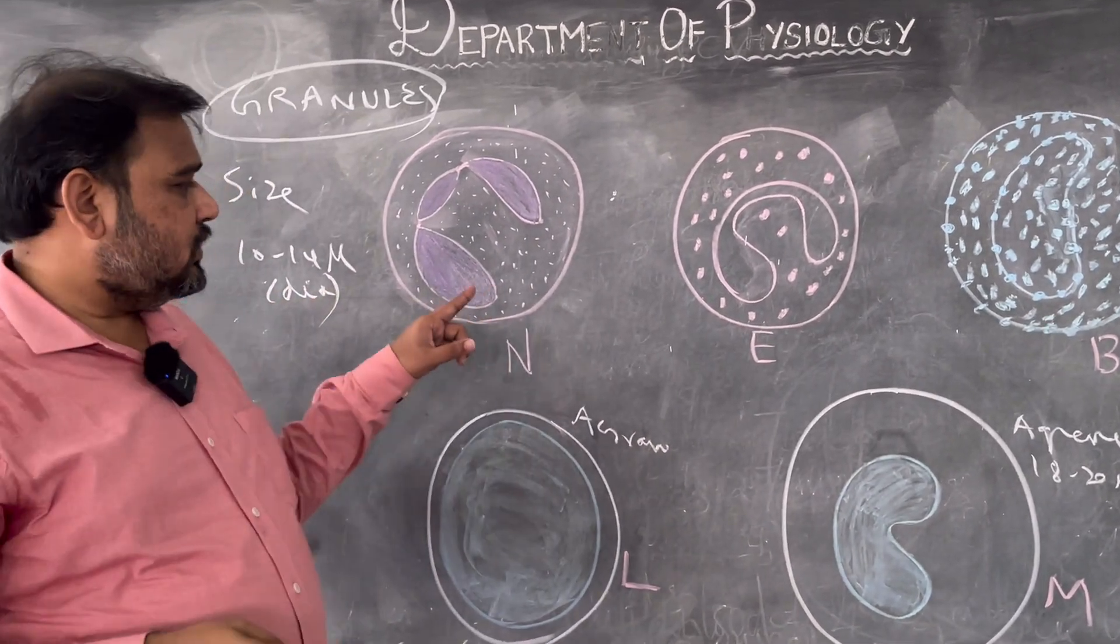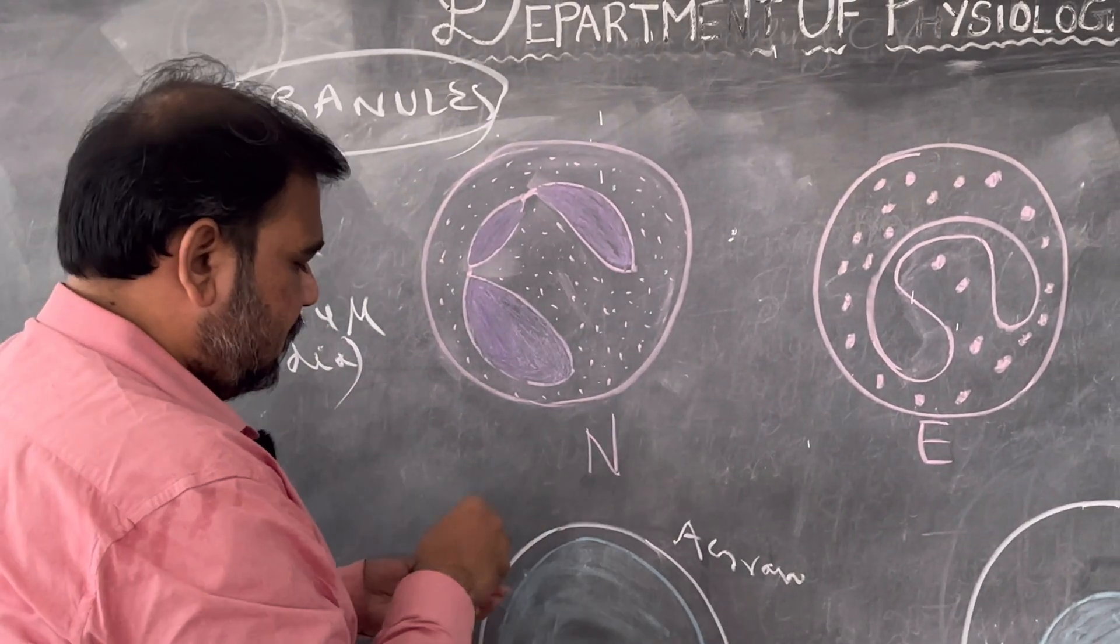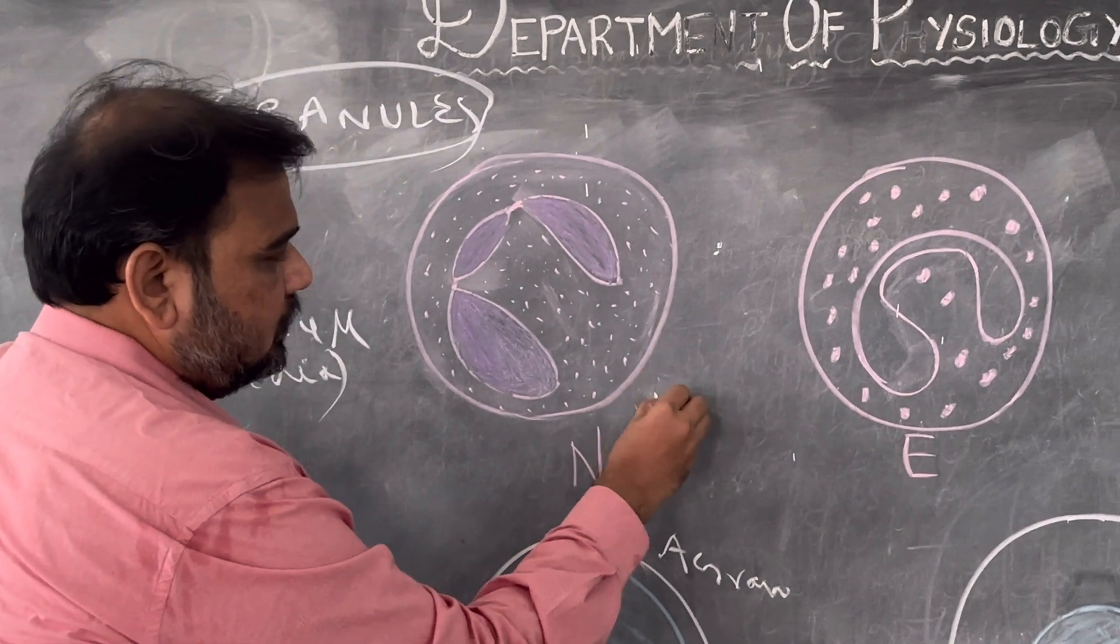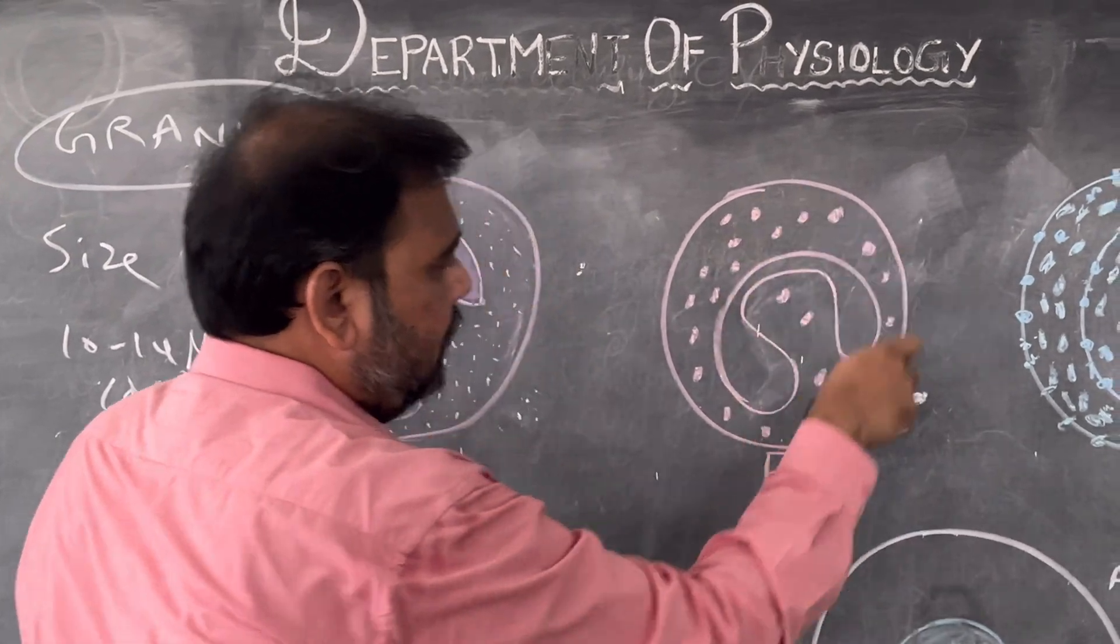Now coming into granulocyte, see here just concentrate. Here the granules are fine, for example it is like this. Fine, thin.